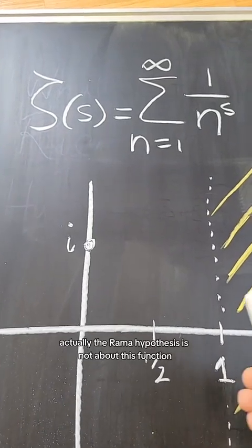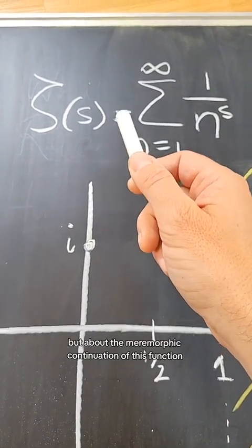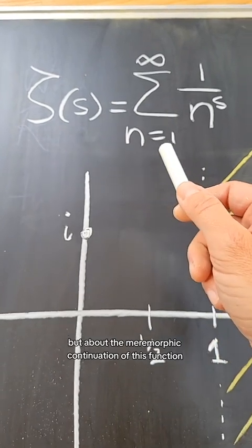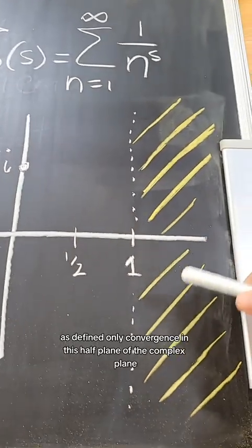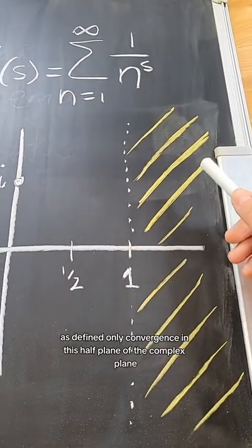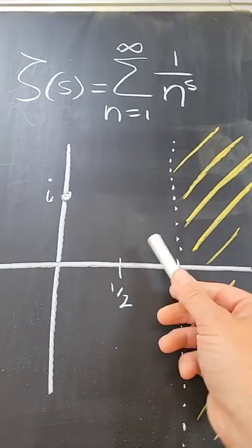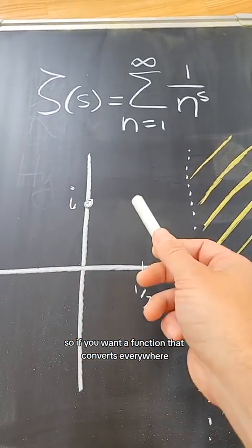Actually, the Riemann hypothesis is not about this function, but about the meromorphic continuation of this function. So it turns out that this function, as defined, only converges in this half plane of the complex plane. So if you want a function that converges everywhere,